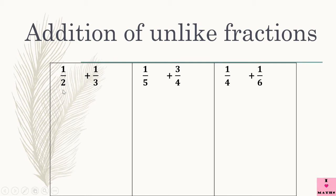What does this mean? It means I will multiply 1 by 3 and 2 by 3. Why? Because 3 is the denominator of the second fraction. Then I will multiply 1 by 2 and 3 also I will multiply by 2. Why? Because 2 is the denominator of the first fraction. So in this way we will get two new fractions, which will be equivalent to the original fractions, 1 upon 2 and 1 upon 3.